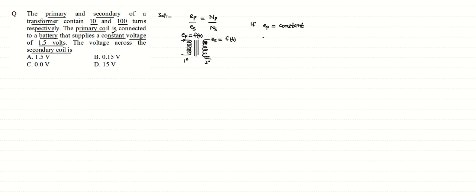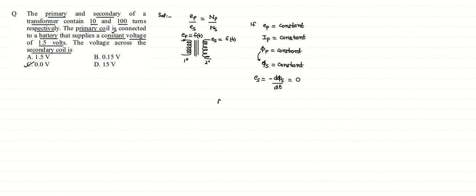If the primary coil voltage is constant, then the current in the primary coil will also be constant. If the current is constant, the flux of the primary coil will be constant. If the flux of the primary coil is constant, the flux of the secondary coil will also be constant, since it is linked with the secondary coil. The EMF in the secondary coil is given by minus the rate of change of flux, and since the flux is constant, this value comes out to be zero. So the correct answer is option C: the voltage across the secondary coil is zero.